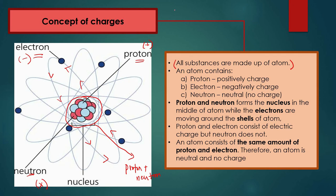An atom has the same amount of protons and electrons, which means proton number and electron number are equal — making it neutral. However, if the proton number is more than the electron number, that substance is positively charged. If the electron number is more than the proton number, then it will be negatively charged. Since atoms have equal protons and electrons, an atom is a neutral substance.